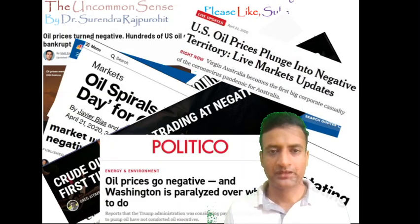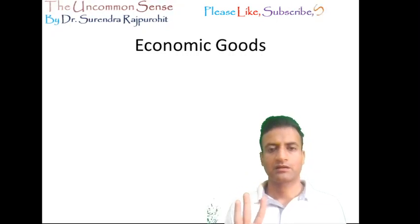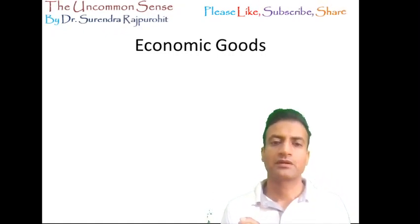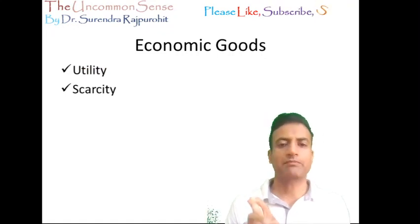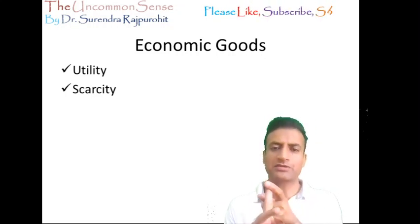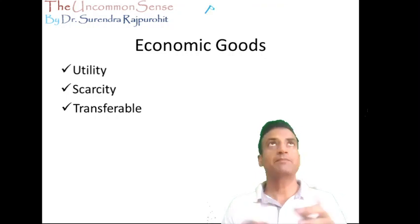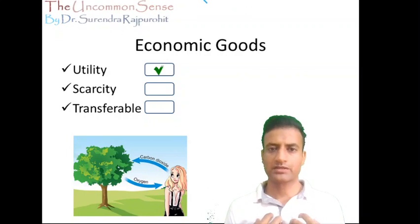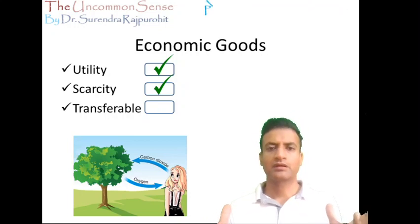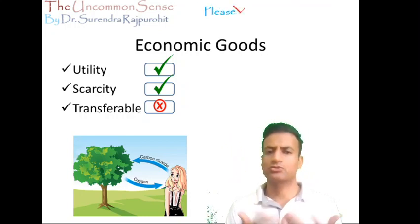Economics says that any commodity, if it qualifies three conditions, will command a price and be known as an economic good. First, it must have some utility for somebody. Second, it should be scarce — there should be scarcity of that commodity. And third, it should be transferable. For example, the oxygen in this air has utility for us and there is scarcity of it, more so with the increasing pollution level. But it cannot be transferred — I cannot take it and give it to you — so therefore, there is no price attached to it. It is all free.